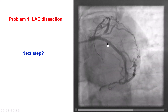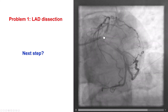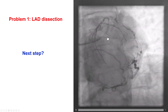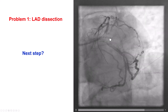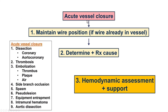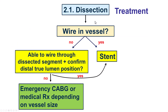Fortunately, the circumflex was not affected, so a wire was placed in the circumflex. But we do have a diagonal whose ostium is close to the area of dissection. Regarding acute vessel closure: the most important thing, if we have wire position already in the vessel, is to keep the wire where it is, find the cause — the key causes being dissection and thrombosis or embolization — and then see if the patient becomes hemodynamically unstable and requires hemodynamic support. In this particular case, this was most likely a dissection, likely from deep engagement of the guide catheter.